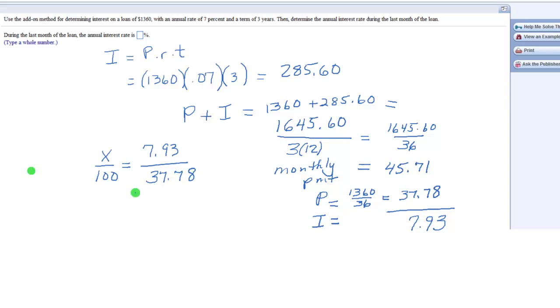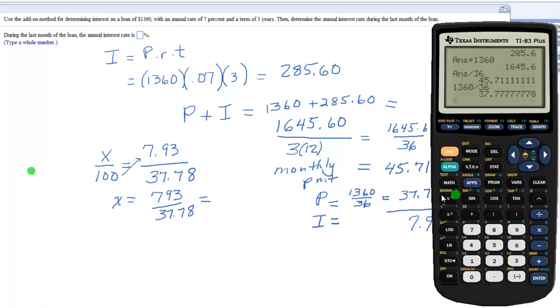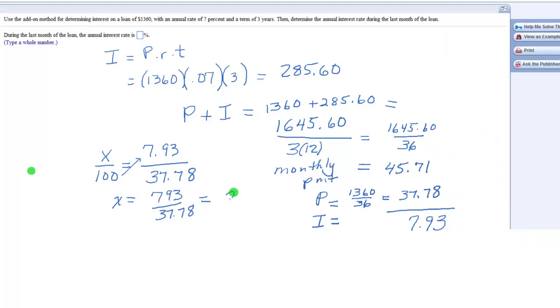And so then you're going to do that cross multiplication thing. We're going to bring this 100 up, which is 793 divided by 37.78, and then let's do that in the calculator, so 793 divided by 37.78, so that interest is about 21% of the principal.